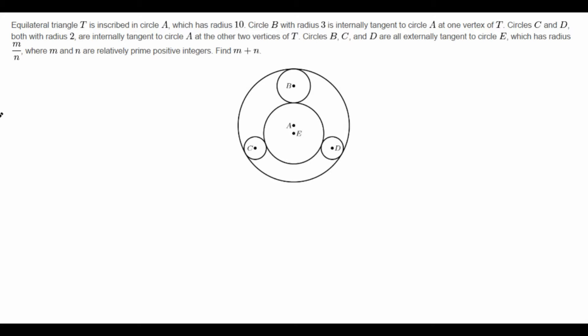We start with an equilateral triangle T inscribed in circle A. We notice that this triangle T isn't pictured, so we probably will have to draw it in later. Circle A has radius 10. We have circle B with radius 3, and two circles C and D both with radius 2, that are internally tangent to circle A at the vertices of T. So these tangency points are going to be the vertices of our undrawn triangle T.